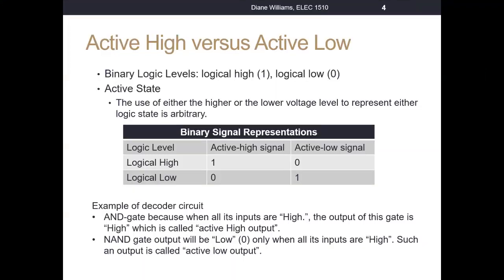Concepts of active high and active low. We've been talking about binary logic levels, so we have a logic level high and a logic level low. We also talk about the active state of a circuit, and that goes back to relating to whether or not a higher or a lower voltage represents the logical state. So we could have a high voltage represent a logic low, which seems like an inverse, or a high voltage represent a logic high.